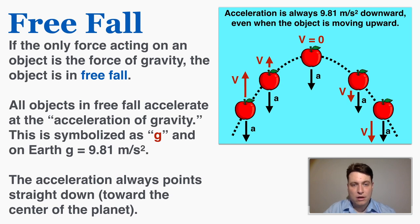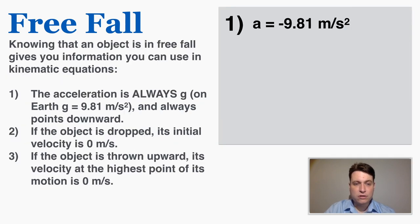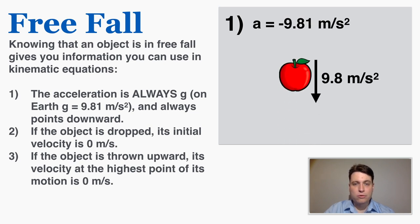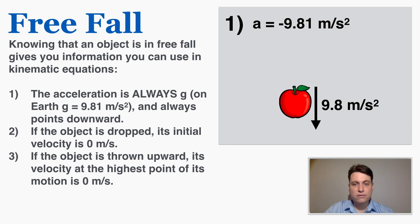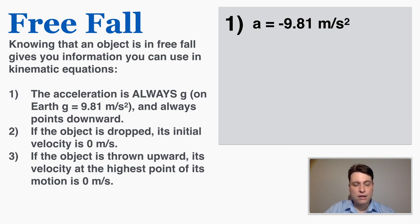Knowing that an object is in freefall gives you specific information you can use in kinematics equations. Here are three things you know when an object is in freefall. First, the acceleration is always g, which is 9.81 meters per second squared, always pointed downward. If your downward direction is positive, your acceleration is positive 9.81. If your downward direction is negative, the acceleration is negative 9.81.